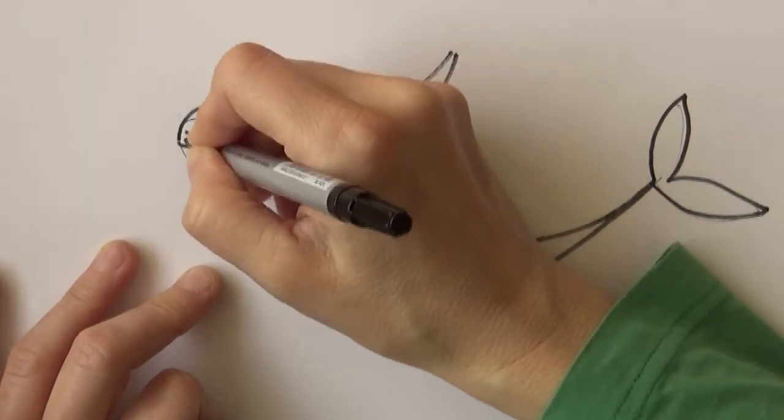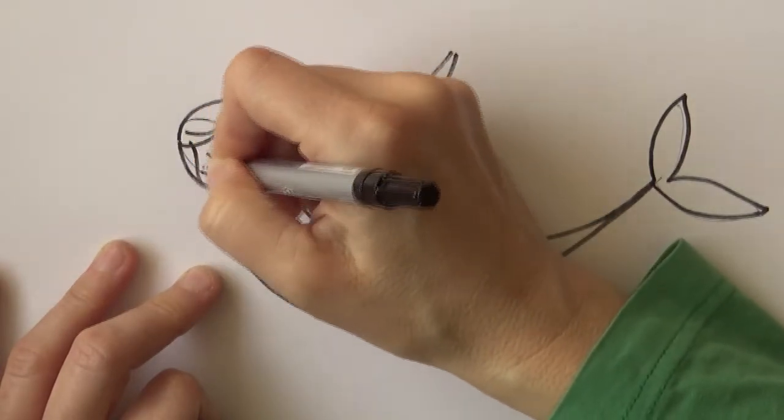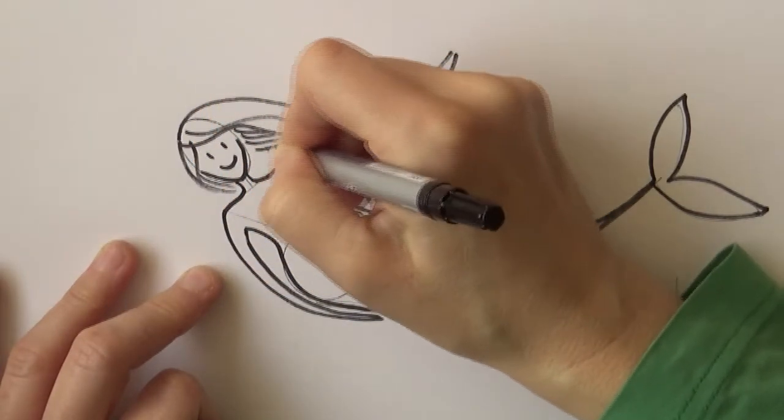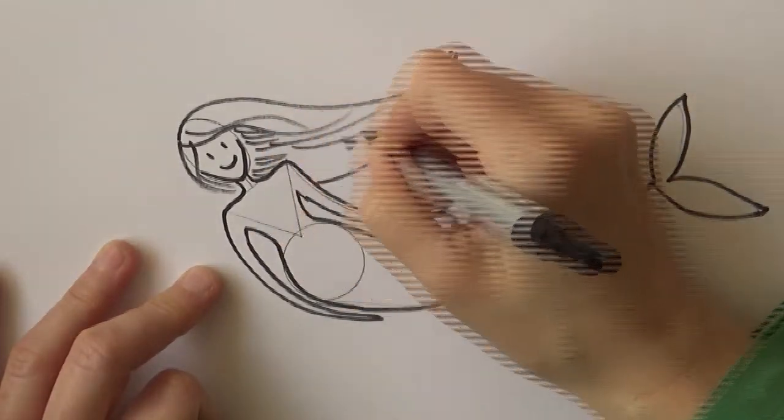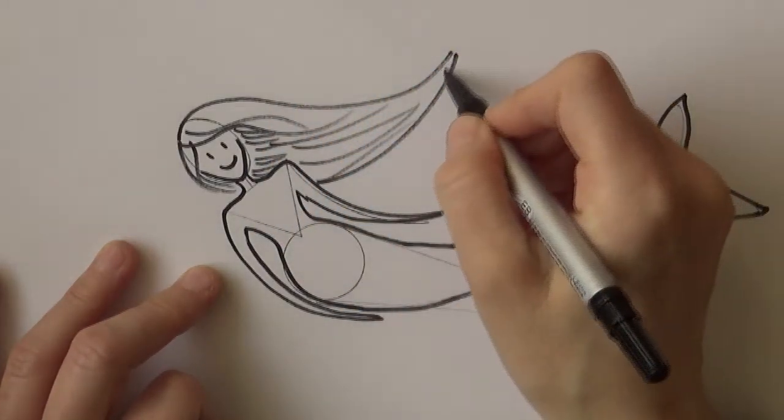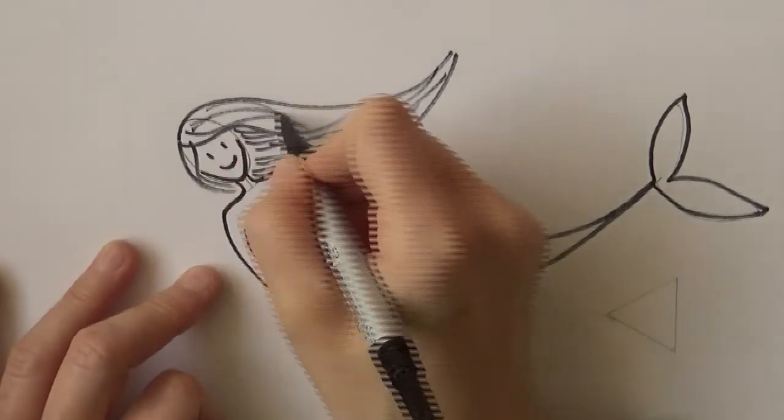Then you can make any kind of hair you want to. I'll just make very simple wavy hair, but you can make afro, you can make thin hair, you can give her short hair if you want to. Nobody says they have to have long hair. And that's our mermaid for today. That's how we draw a mermaid.